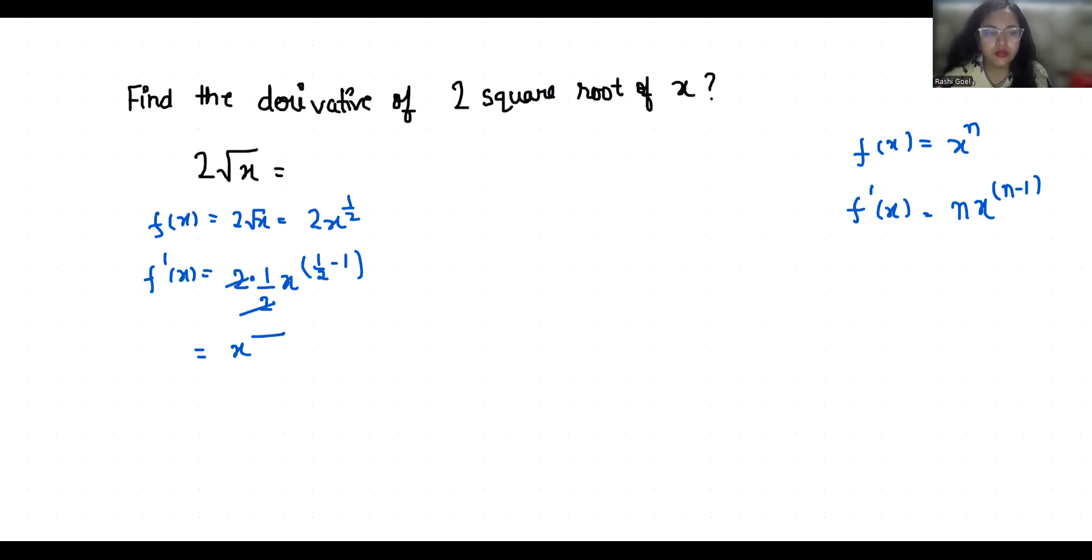1/2 minus 1 is (1-2)/2, so x^(-1/2), which I can write as 1 divided by √x.